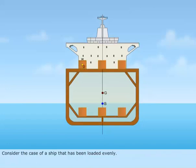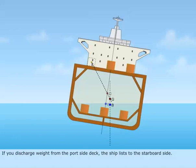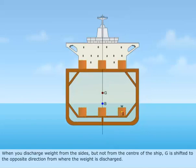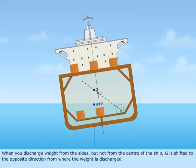Consider the case of a ship that has been loaded evenly. If you discharge weight from the port side deck, the ship lists to the starboard side. Observe the center of gravity G when the ship is listing. When you discharge weight from the sides — but not from the center of the ship — G is shifted to the opposite direction from where the weight is discharged.